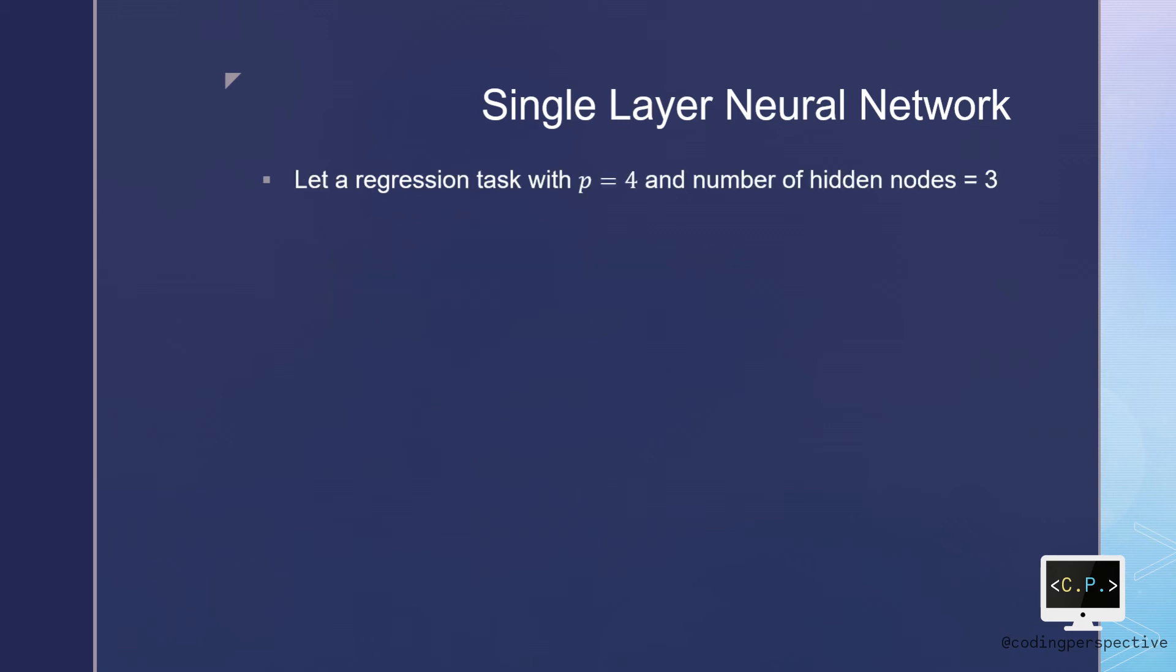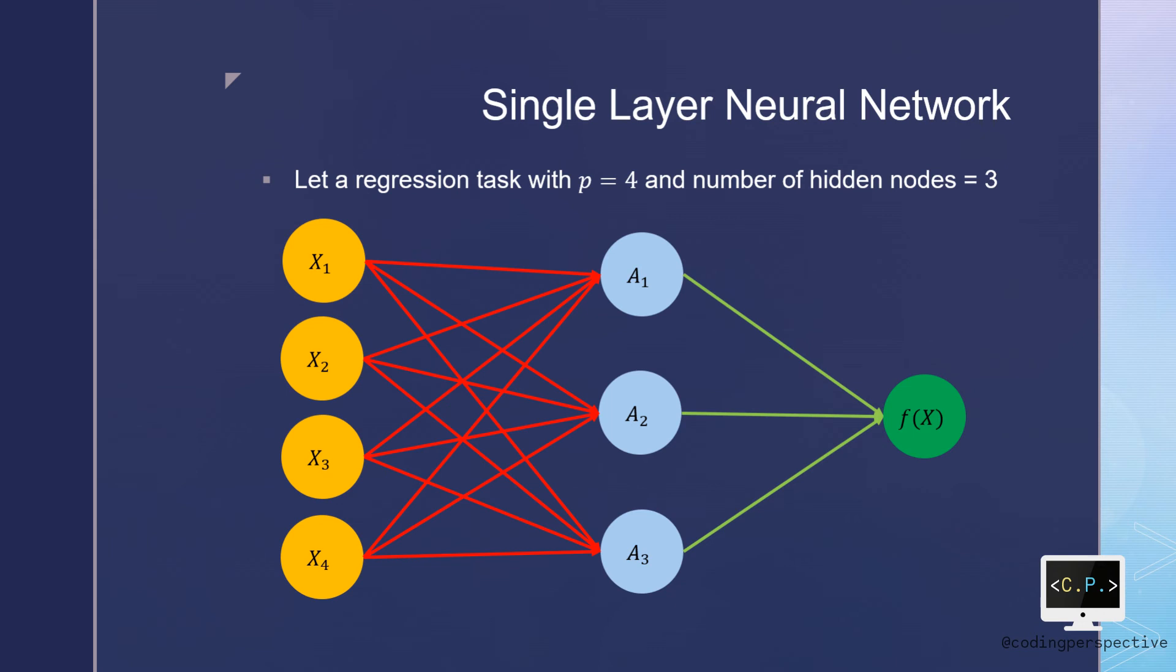If we assume that our data has four features and the number of hidden nodes are three, we have the following structure. We have four input nodes and three hidden nodes in the hidden layer. Since we have a regression task, our output should be an output with one node.